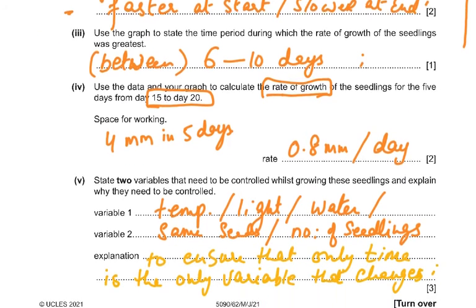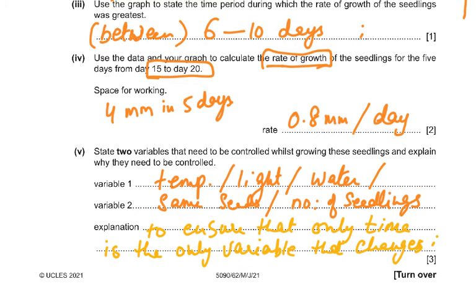State two variables that need to be controlled while growing these seedlings and explain why they need to be controlled. Why would they need to be controlled? Because you're changing, you're noting the time, the growth per unit time. You'd have to keep the temperature the same, the light, water, the same seed, the number of seedlings the same. The explanation was to ensure that only time is the only variable that you have changed. The rest of it all is very constant. If you give it less light or more light, that would also affect it. If you take five seedlings instead of 10, if you keep one at 20 degrees Celsius and the other at 40 degrees Celsius, then you're varying the other variables. You can't be changing two parameters at one time. This is something which you need to understand and be very clear in scientific experiments.